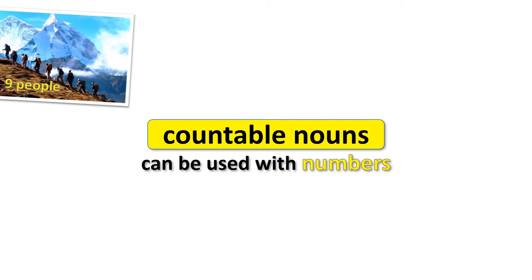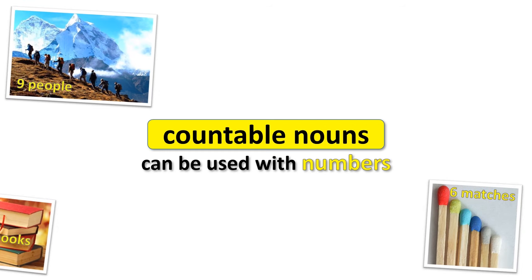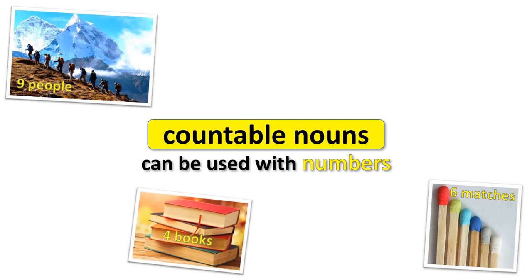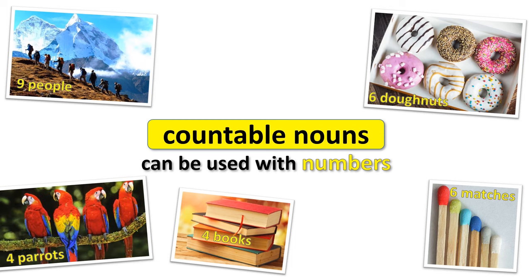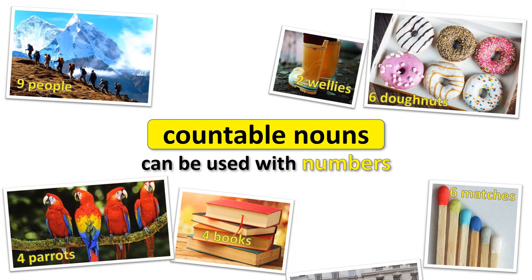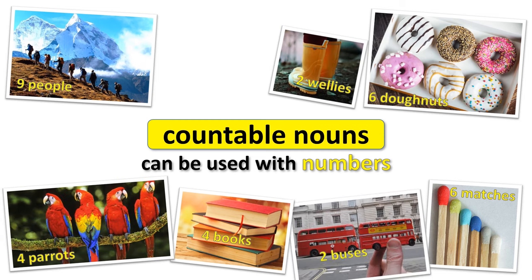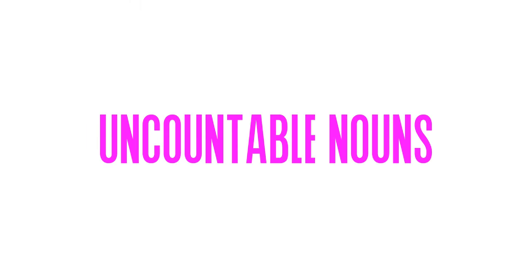For example: 9 people, 6 matches, 4 books, 6 donuts, 4 parrots, 2 wellies, 2 buses, 14 coins. Now let's go through the nouns that are uncountable.